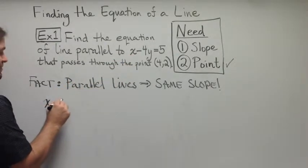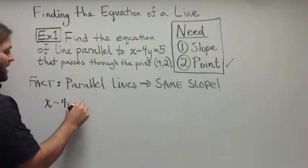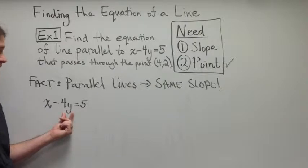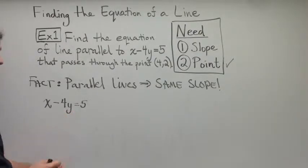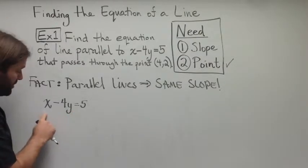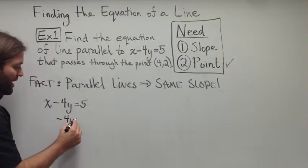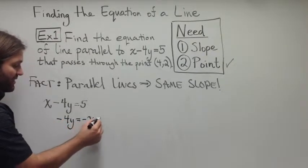If we have x minus 4y is equal to 5, probably the easiest way to find the slope is to simply solve for y. That would be putting the equation in slope intercept form. In order to do that, we could subtract x from both sides. So, minus 4y is equal to negative x plus 5.